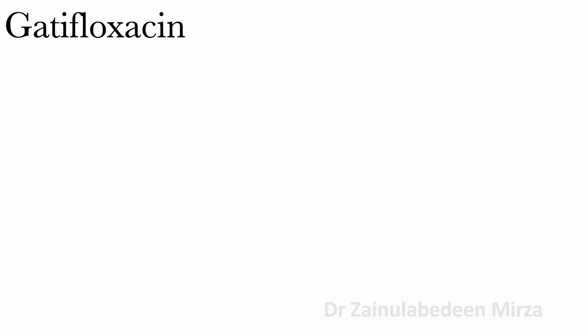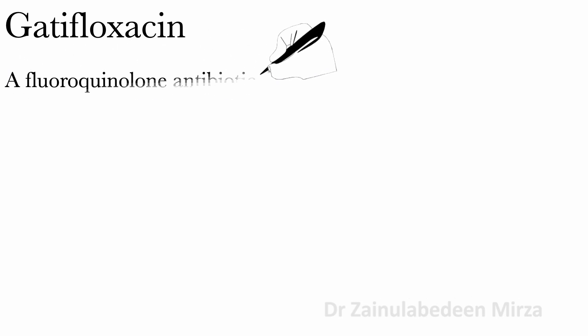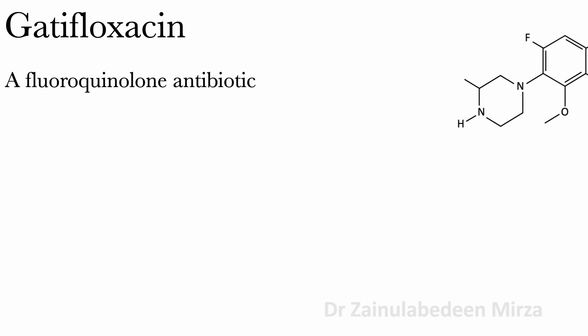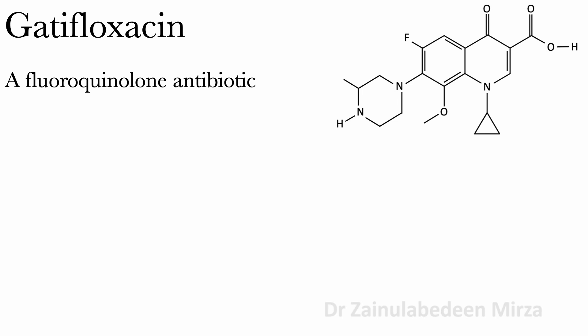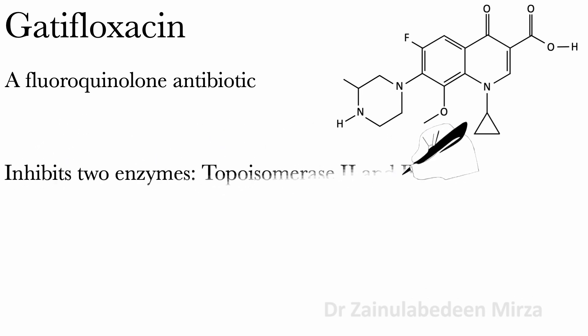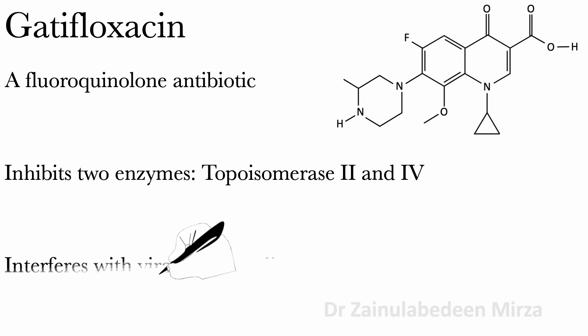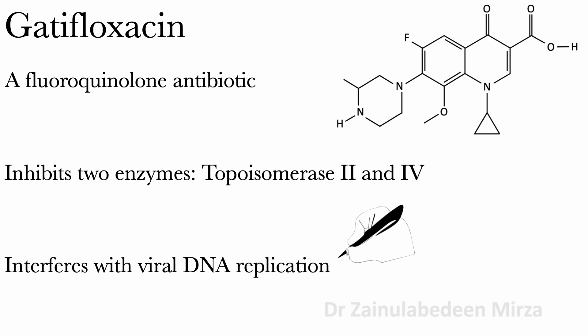Gatifloxacin is a fluoroquinolone antibiotic that inhibits two enzymes, topoisomerase II and IV, in susceptible microorganisms. Gatifloxacin interferes with bacterial DNA replication and prevents or delays resistance emergence, making it bactericidal.